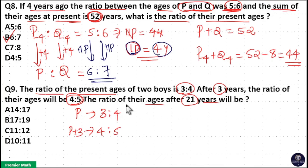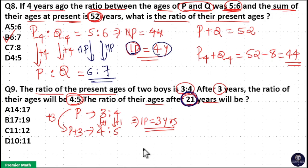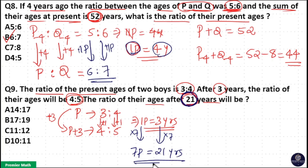We need to find the ratio of their ages after 21 years. After 3 years the ratio changed to 4 is to 5 — the increment is 1 for each: 3 changed to 4 and 4 changed to 5. So an increment of 1 part equals 3 years, meaning 1 part equals 3 years. Since 21 years equals 3 multiplied by 7, that means 21 years equals 7 parts.